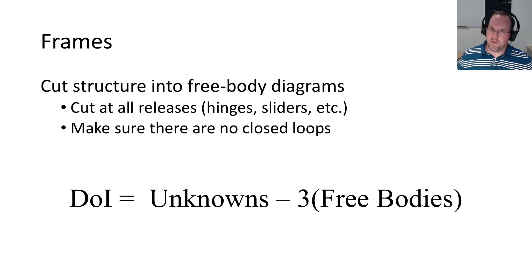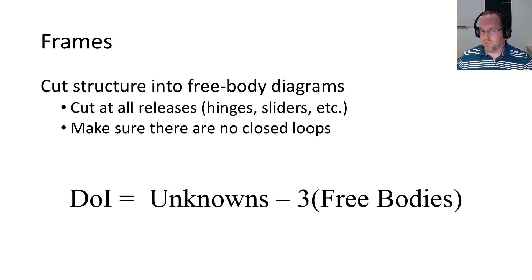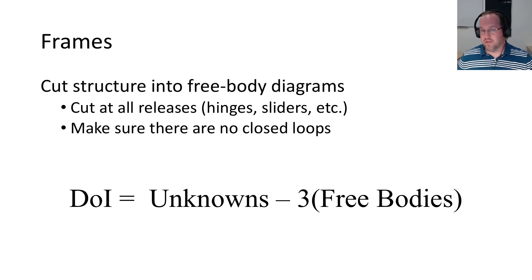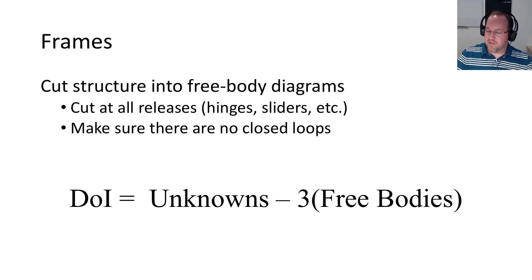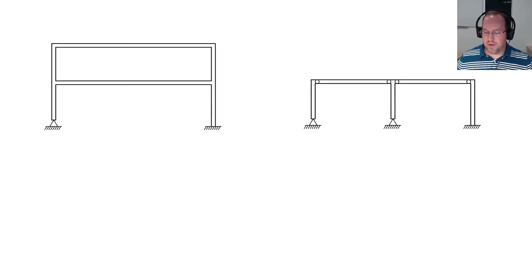Moving on to frames, we take a different approach because we have a different number of equations of equilibrium. The easiest way is to cut the structure into a set of free body diagrams. We always cut at all the releases — a release is where we know something specific. At a hinge, the moment is zero; at a slider or expansion joint, one internal force is zero. We also cut to ensure no closed loops remain in the structure. The degree of indeterminacy is the number of unknowns minus three times the number of free body diagrams, since each FBD has three useful equilibrium equations in 2D.